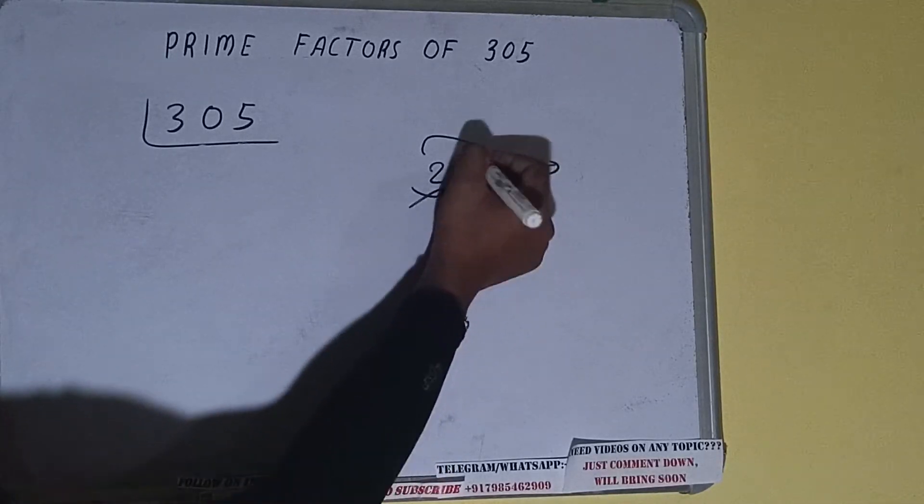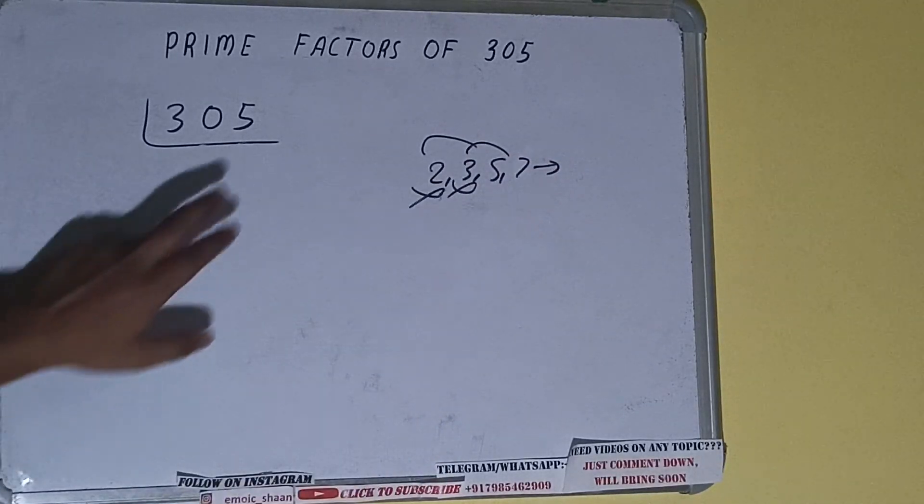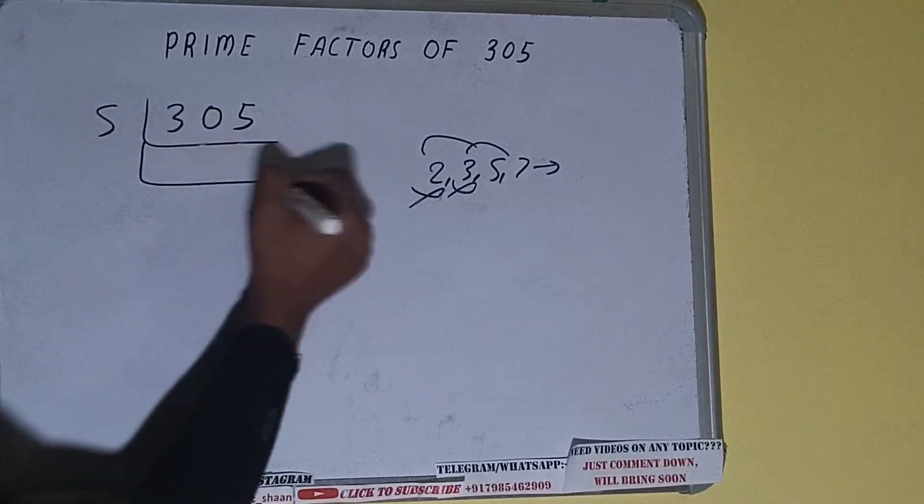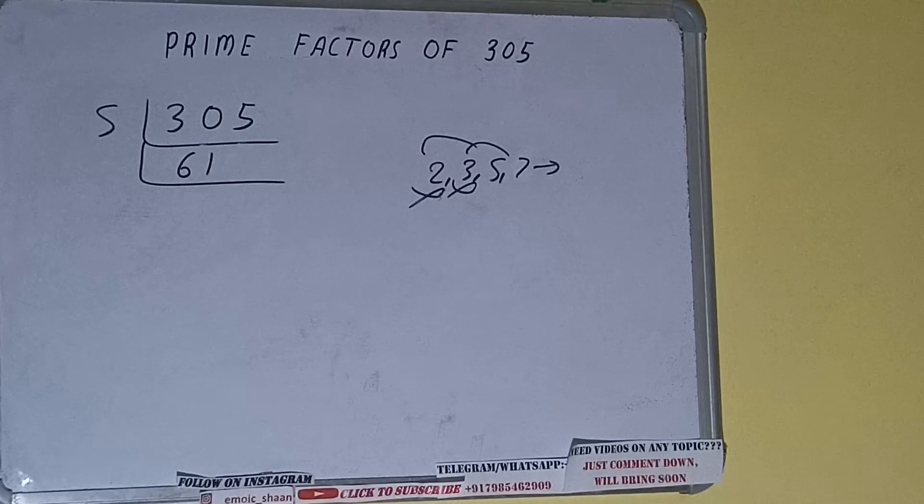Let's check with 5. The last digit is 5, so it is divisible by 5, and we'll be having 61. Now 61 is not divisible by 5, and on that, 61 is also a prime number.